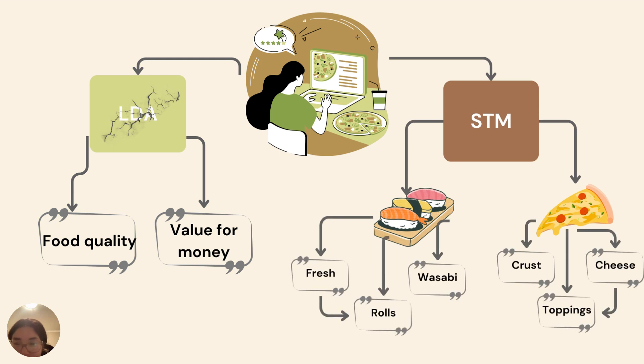STM not only identifies topics, but also considers their correlations, adapts word distributions like fresh, rolls, wasabi for sushi, and crust, cheese, toppings for pizza, and includes metadata and covariates, providing richer insights and more nuanced analysis.